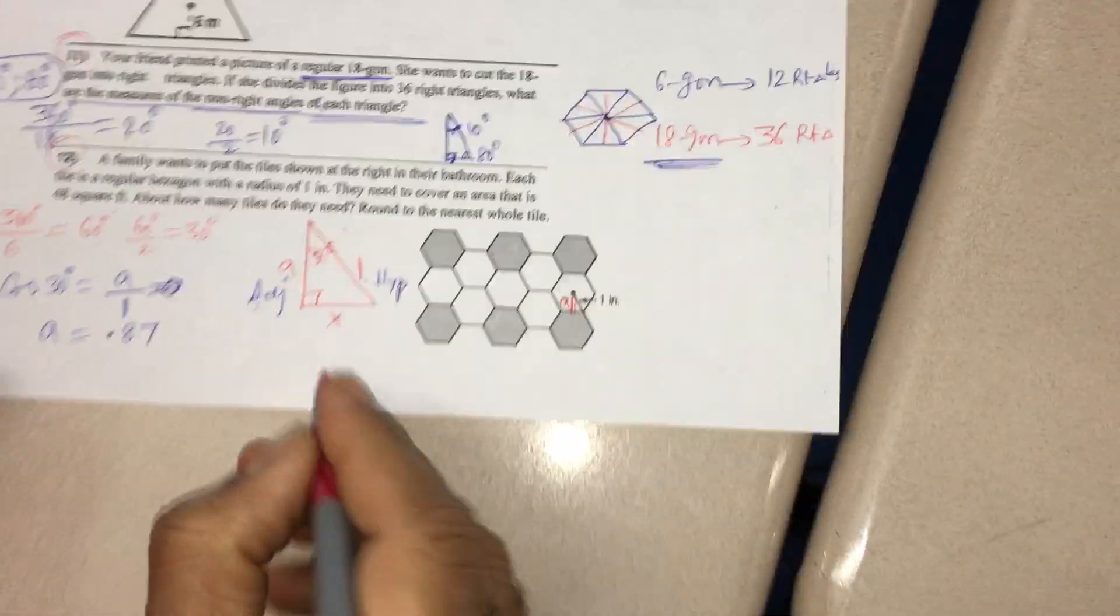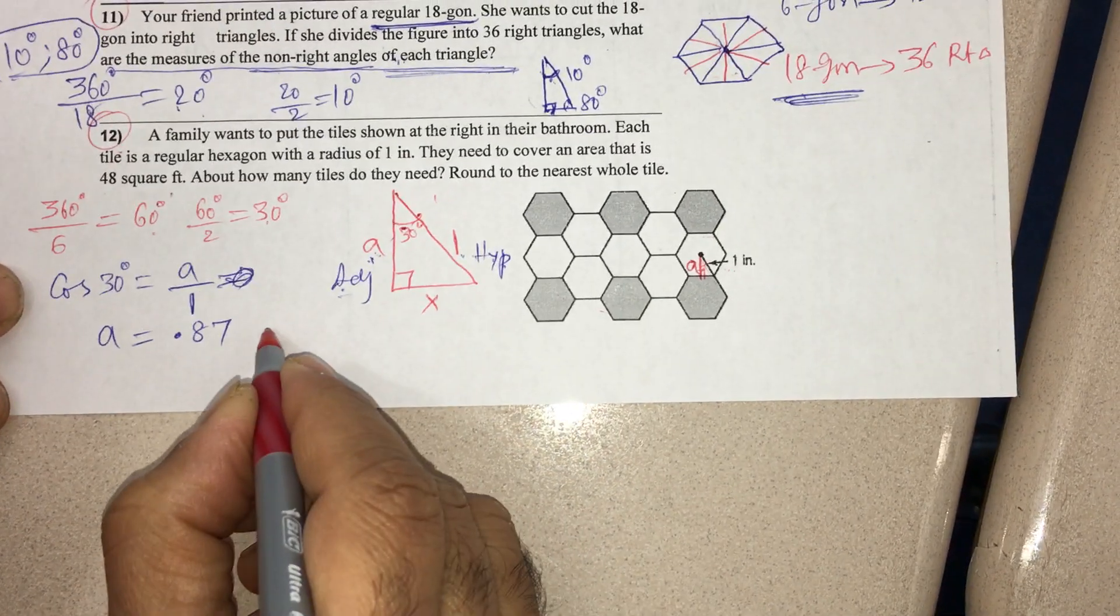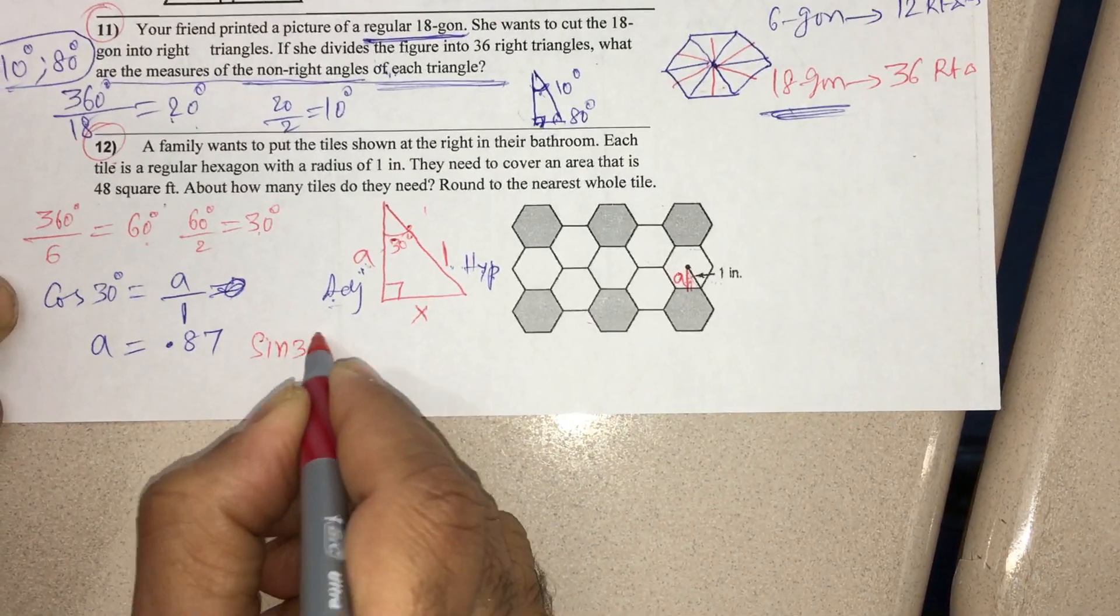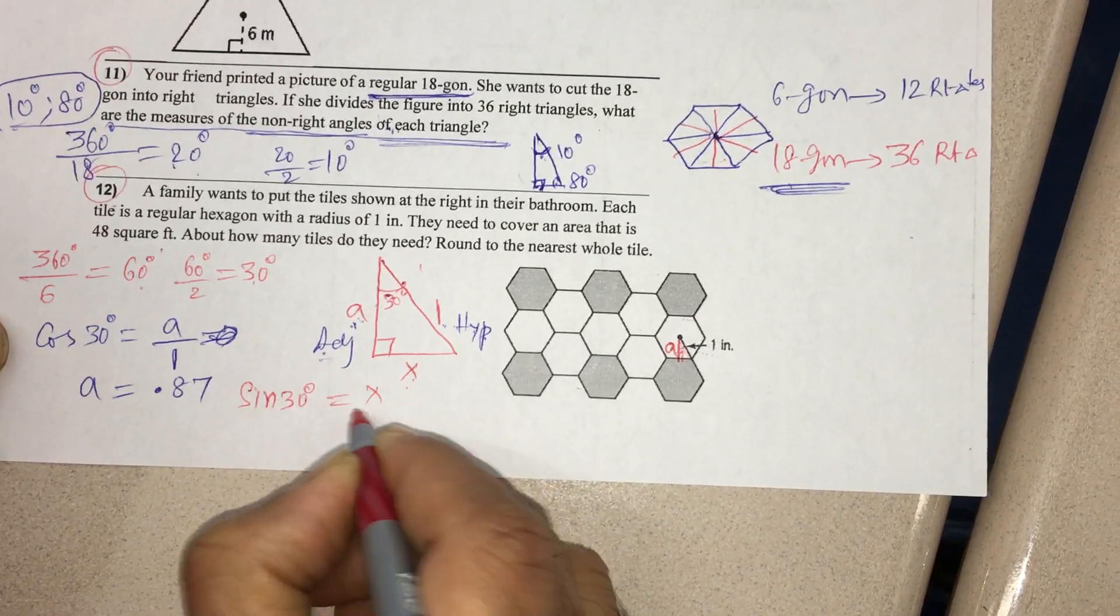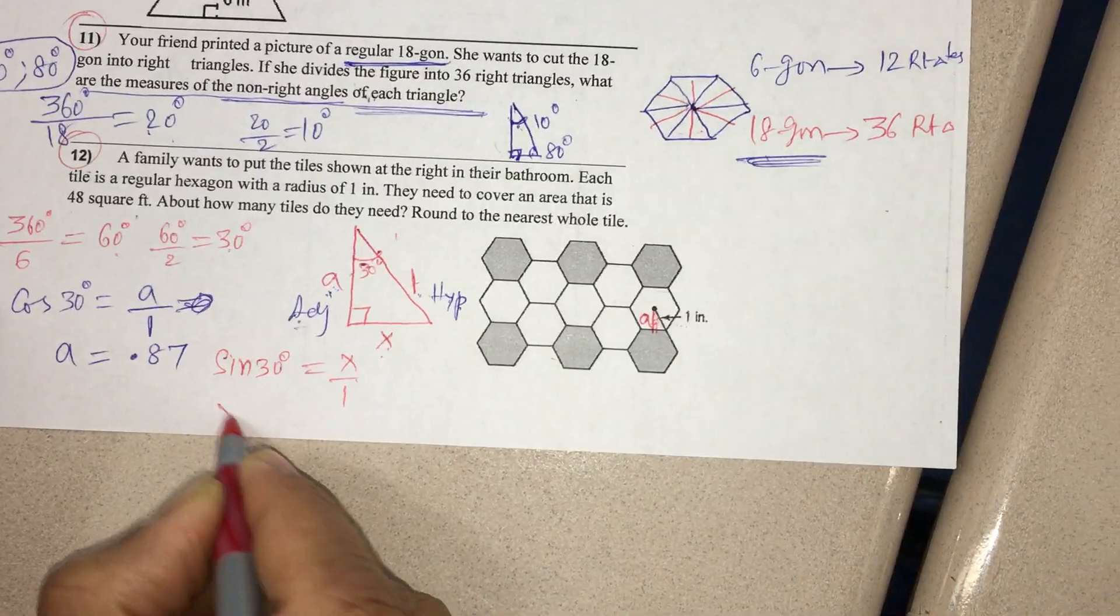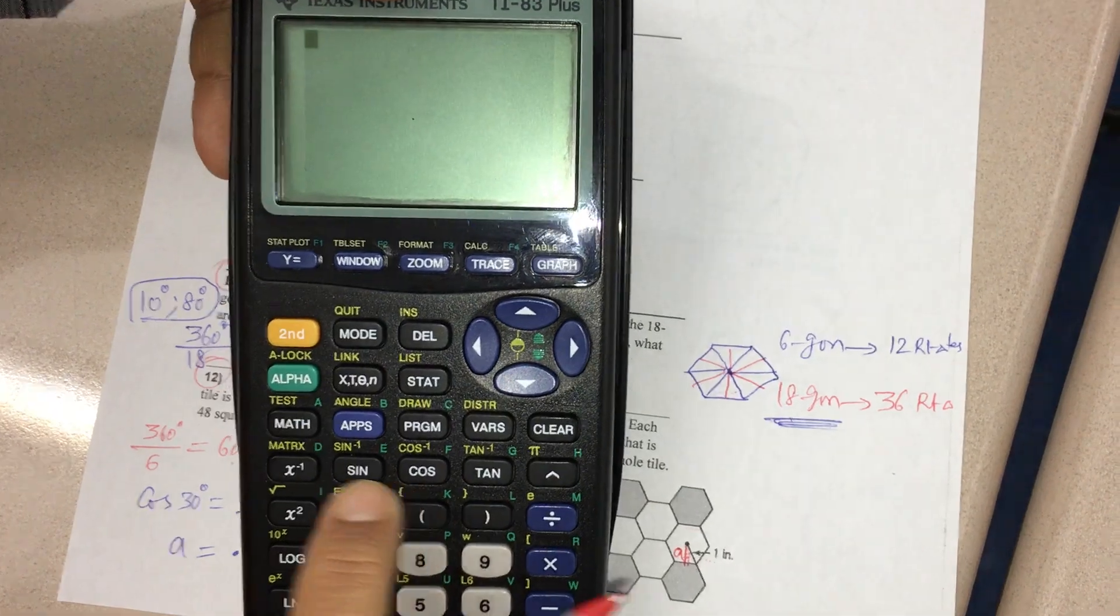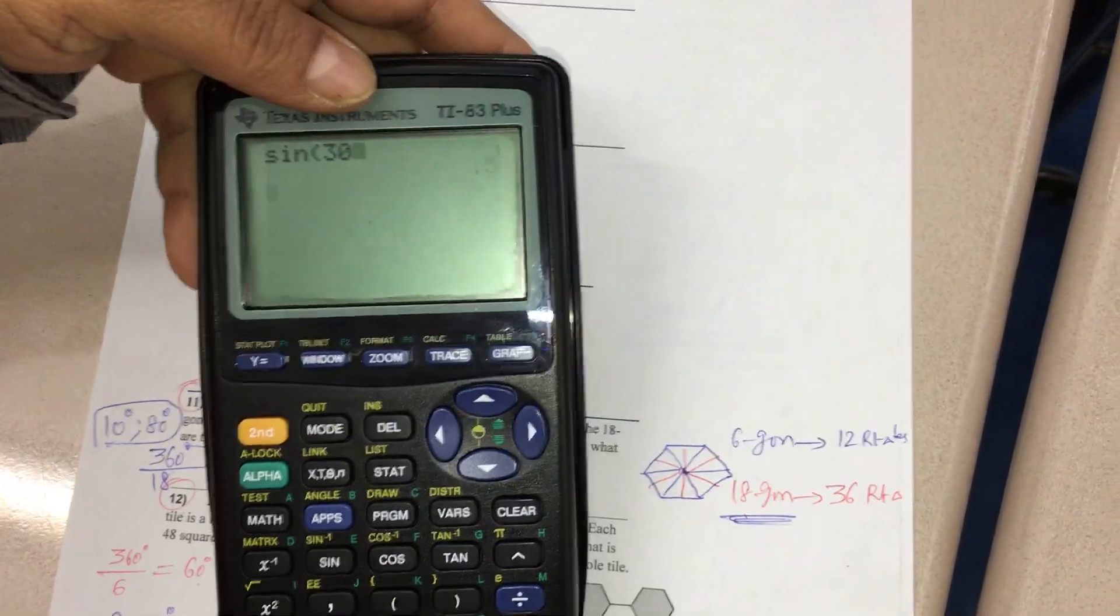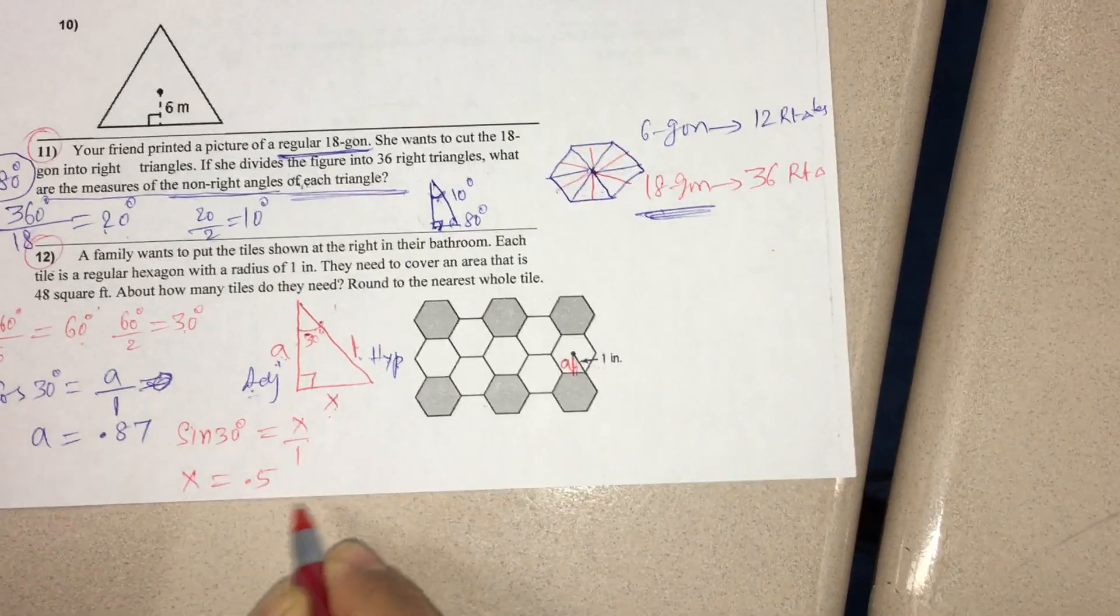Then I want x also. For that I take sin 30 degrees this time. This is the opposite side for 30. So the opposite side is x, the hypotenuse is opposite to 90, which is 1. Therefore, I get the x value. Sin 30, when I use the calculator, I get sin of 30 equals 0.5. So I get 0.5 as the value of x.